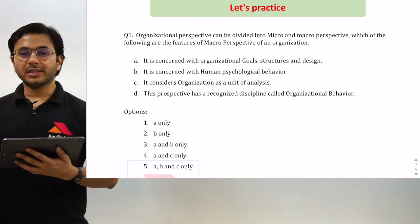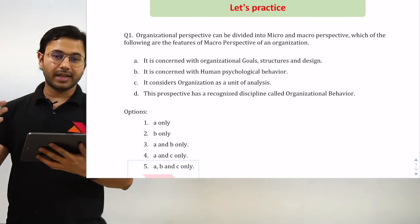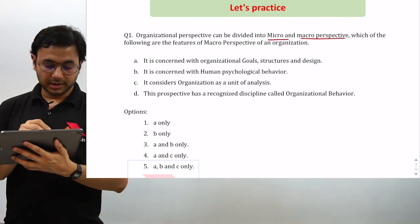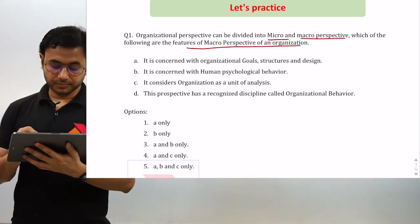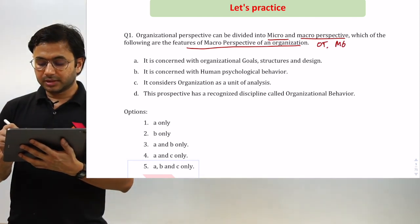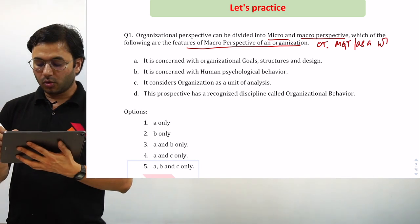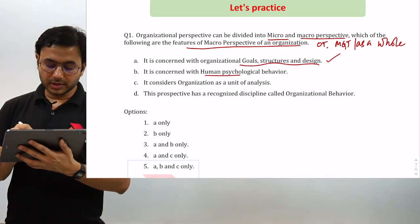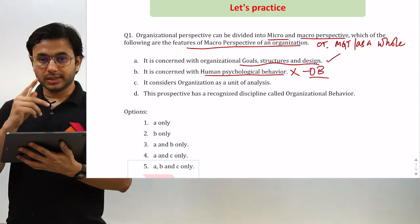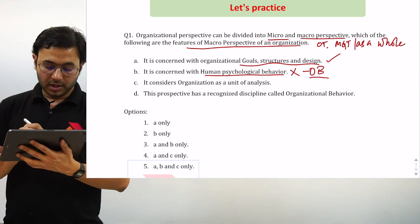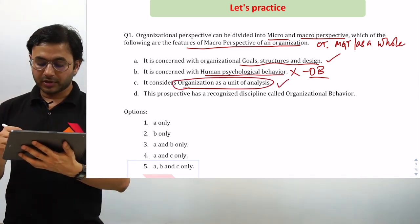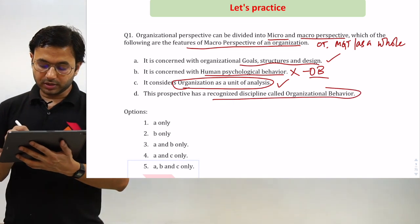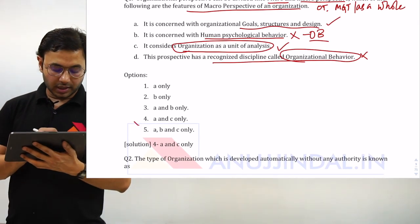Let us revise through a practice question. The question says: organizational perspective can be divided into micro and macro — which of the following are features of the macro perspective? Macro perspective means organization theory — organization as a whole. Option A, it is concerned with organizational goals, structures, and design — correct. Option B, it is concerned with human psychological behavior — no, this is organization behavior, which is micro perspective. Option C, it considers organization as a unit of analysis — correct. Option D, this perspective has a recognized discipline called organization behavior — no, it is organization theory. So only A and C are right, which is option 4.